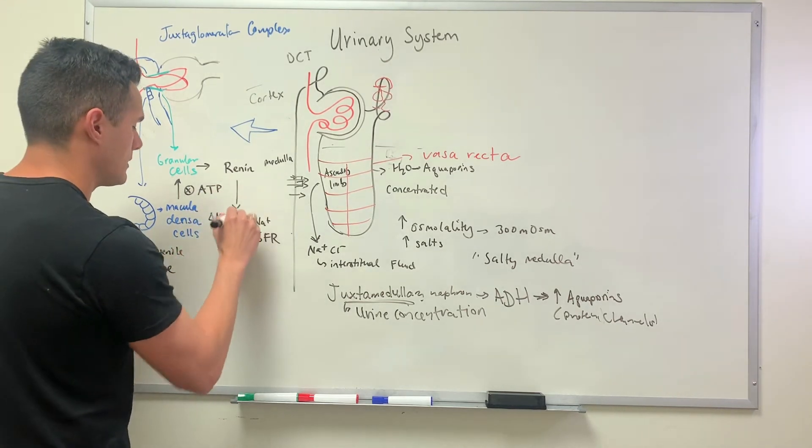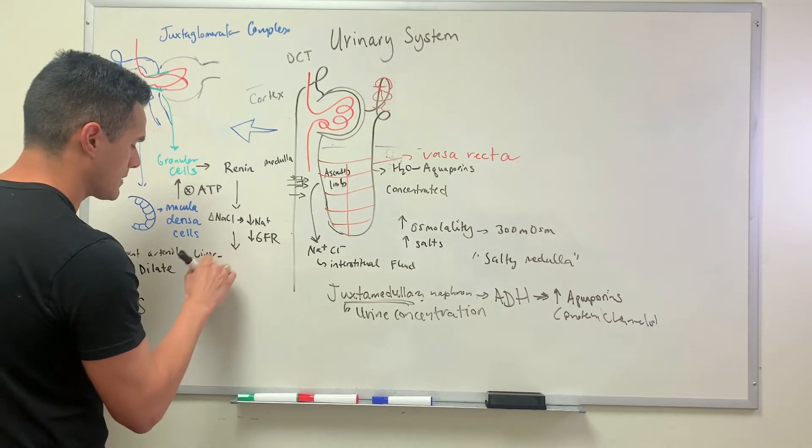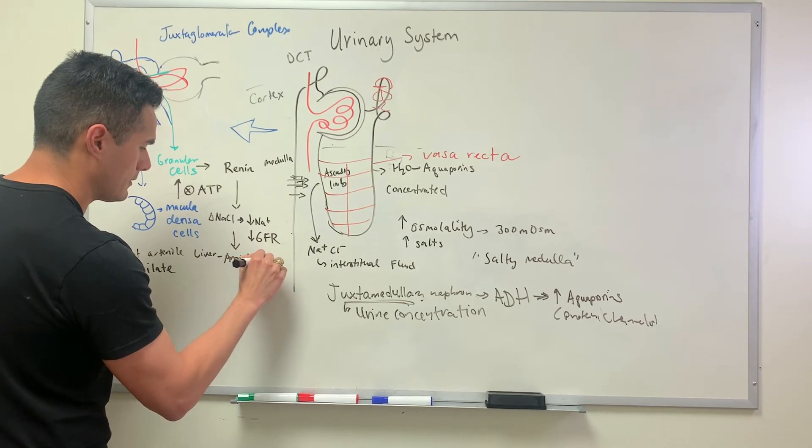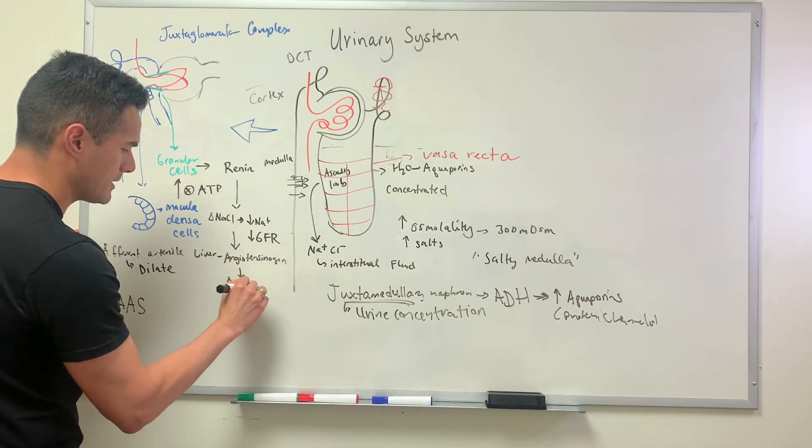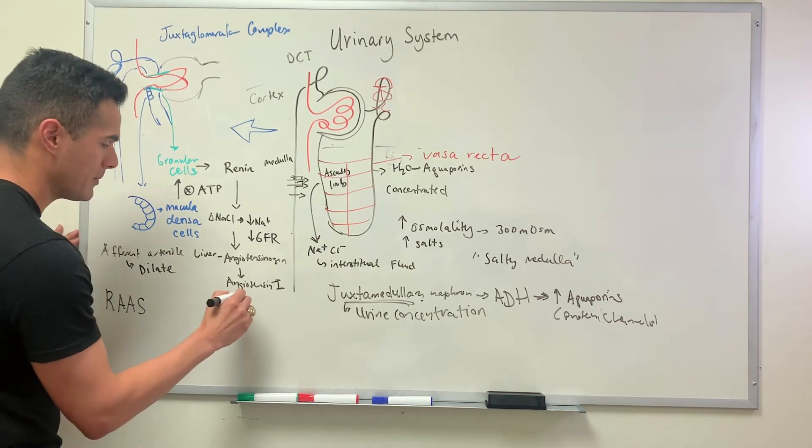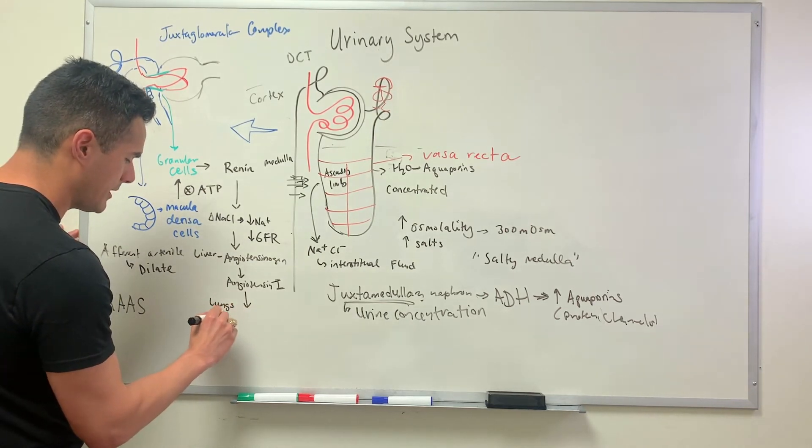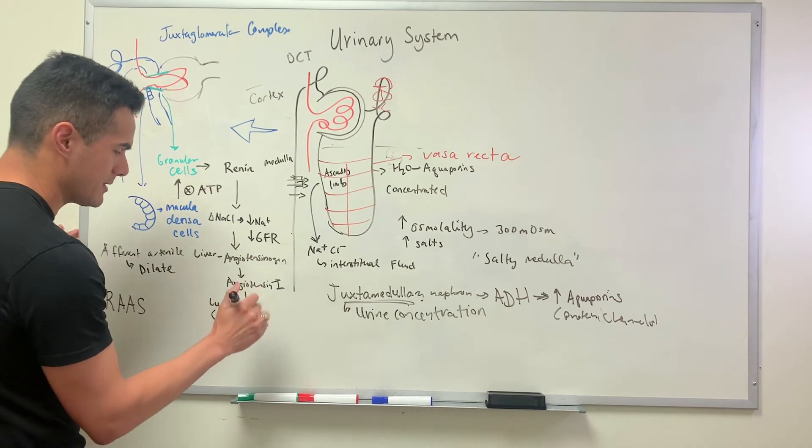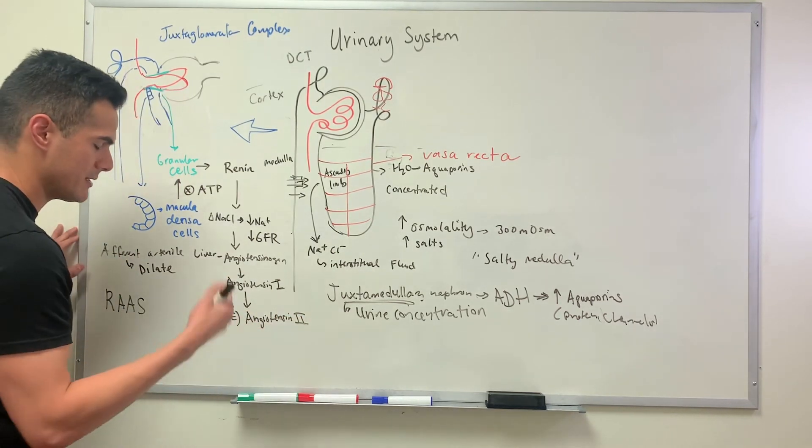When renin is released and gets into the blood, it makes its way to the liver and converts angiotensinogen. Renin is an enzyme and it'll convert angiotensinogen to angiotensin 1. Angiotensin travels through the blood and once it reaches the lungs, the enzyme found within the lungs is known as ACE, angiotensin converting enzyme. It converts angiotensin 1 into angiotensin 2.